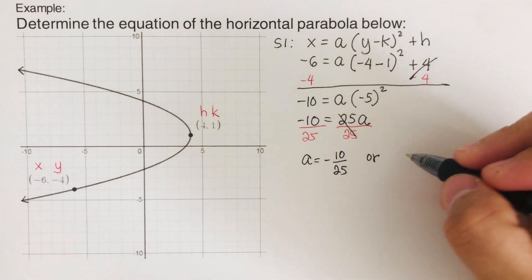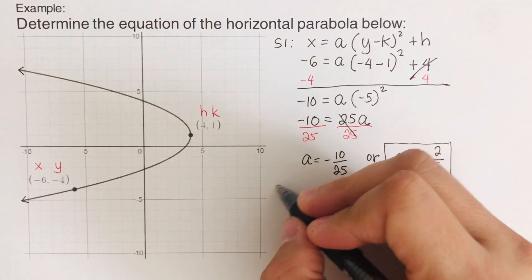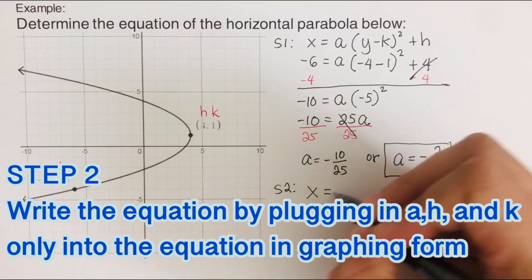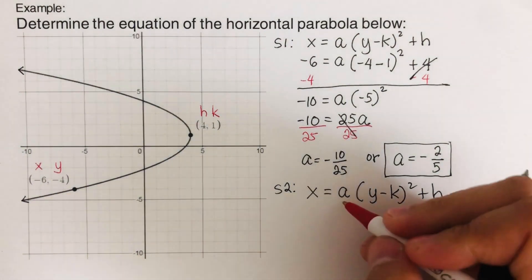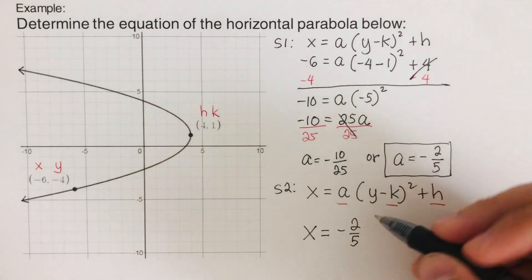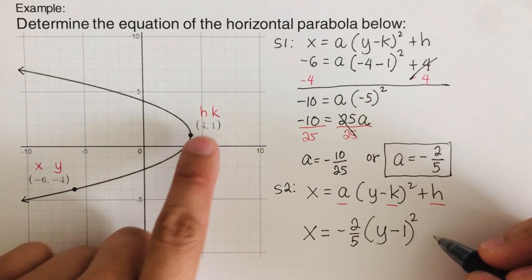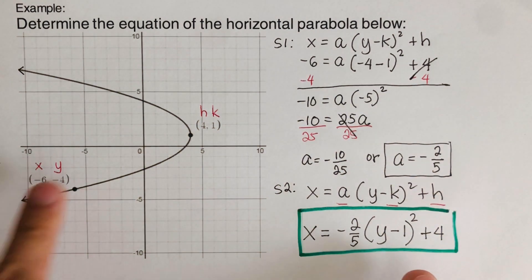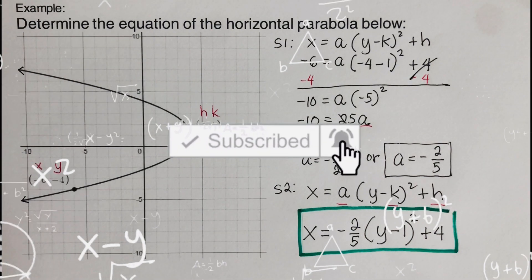Dividing both sides by 25, a equals negative 10 over 25, which reduces to a equals negative 2/5. Now for step 2: write the equation by plugging in a, h, and k into the graphing form x equals a(y minus k) squared plus h. With a equals negative 2/5, k equals 1, and h equals 4, the final equation is x equals negative 2/5 times (y minus 1) squared plus 4. Did you get the same answer? Good, perfect. If you found this video helpful, hit like and subscribe for more math videos.